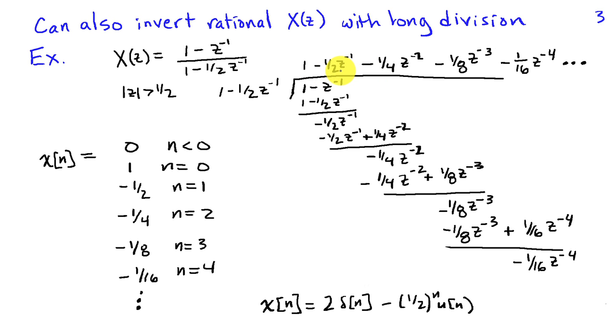And that can be accomplished by multiplying the numerator and the denominator both by z. I'm doing my long division with polynomials expressed in terms of positive powers of z.